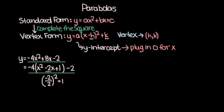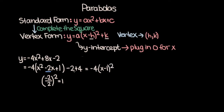But we have to be careful. At this point the two expressions are not equal because of the plus 1 we added, so we have to counteract that addition. We added 1 inside the parentheses, but in reality what we're doing to the expression as a whole is subtracting 4, because all the terms in the parentheses are multiplied by negative 4. To counteract that, we add 4 outside the parentheses so the net addition is 0. Now we have negative 4 times x minus 1 whole squared, and outside the parentheses negative 2 plus 4, so plus 2.